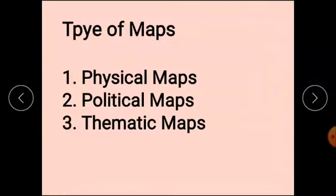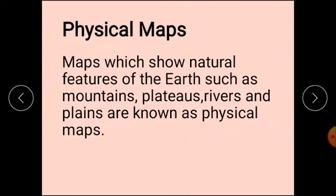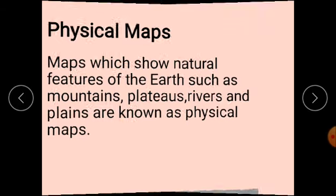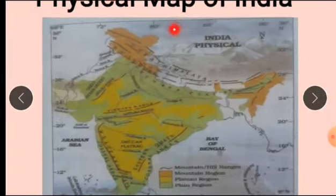Now we will study about the types of maps. There are three types of maps: physical maps, political maps and thematic maps. Physical maps are maps which show natural features of the earth such as mountains, plateaus, rivers and plains.